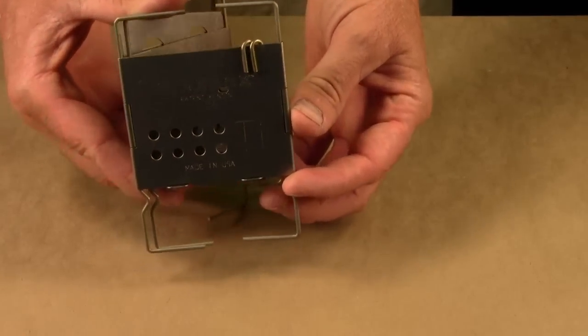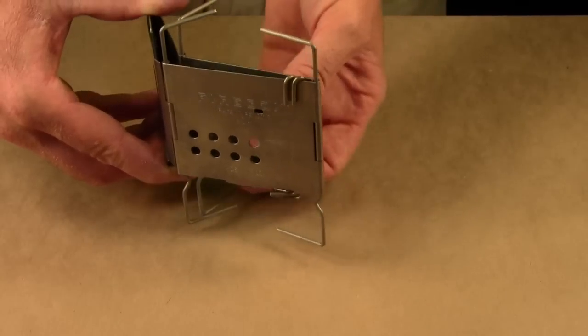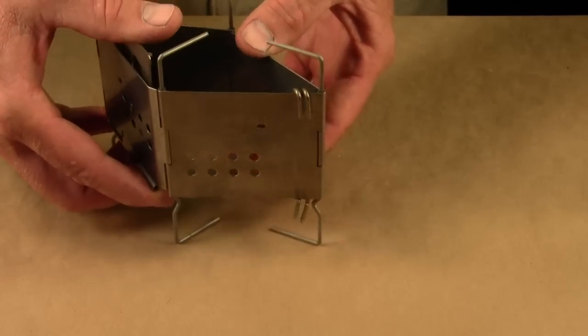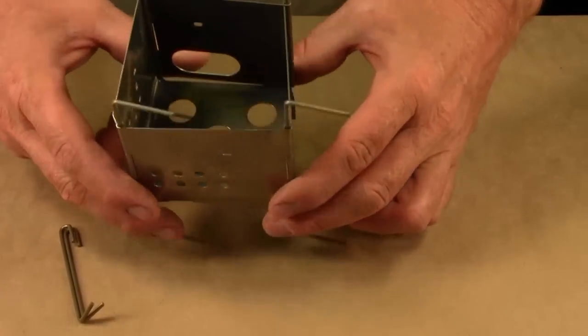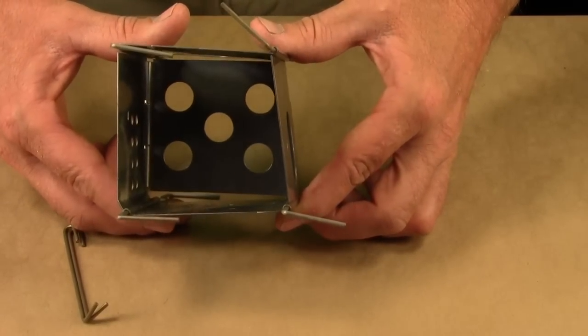So when I open this up, that moves this little tab, moves out of the way, and allows these to be removed. I'm going to go ahead and open up the Nano. You can see the fire grate just drops right down in.